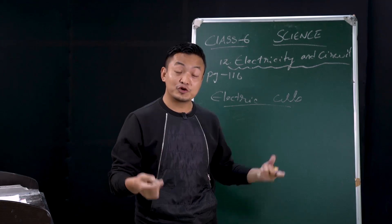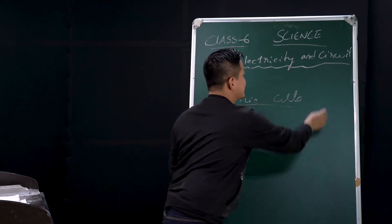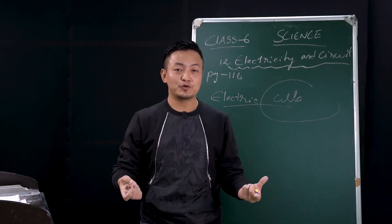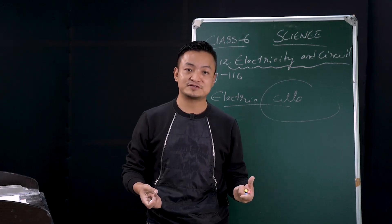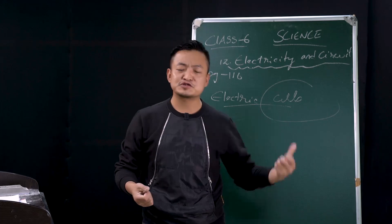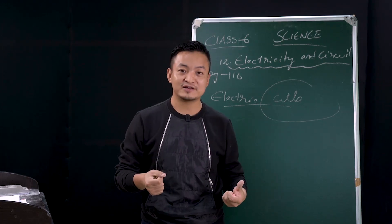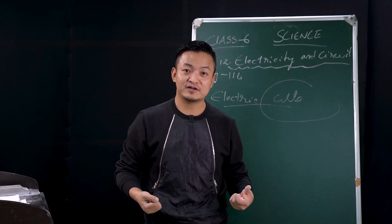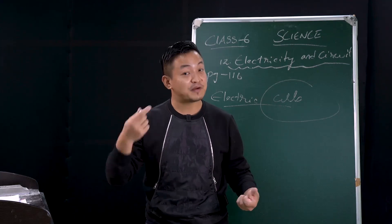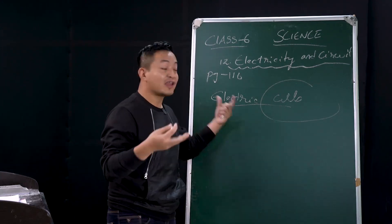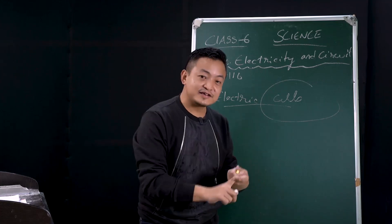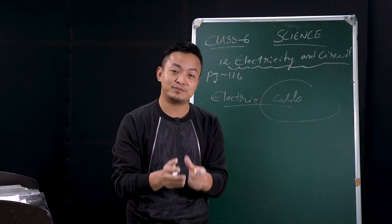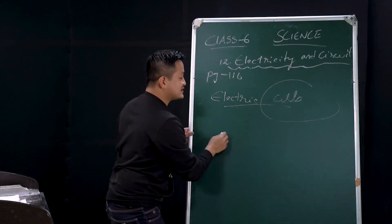A group of electric cells is what we call a battery. Battery is very helpful to all of us. If there's no current, we use a torchlight, and the torchlight runs with the help of a battery. So a battery is made up of electric cells.